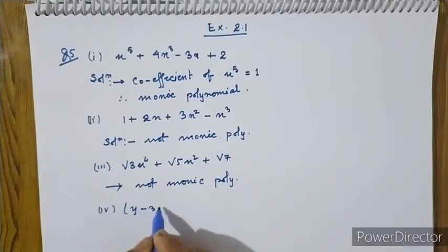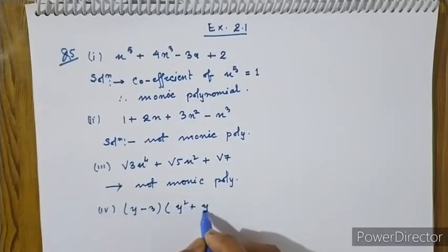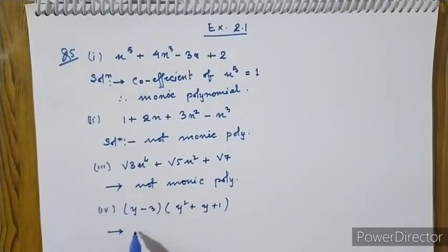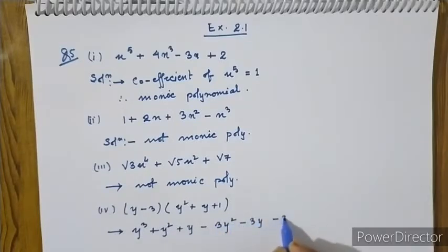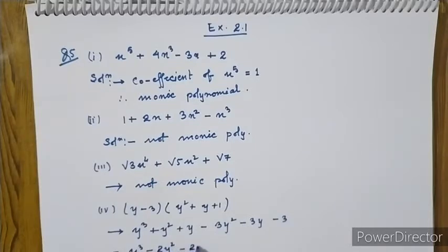Now for (y minus 3) multiplied by (y squared plus y plus 1). Expanding: y cubed plus y squared plus y minus 3y squared minus 3y minus 3, giving y cubed minus 2y squared minus 2y minus 3.